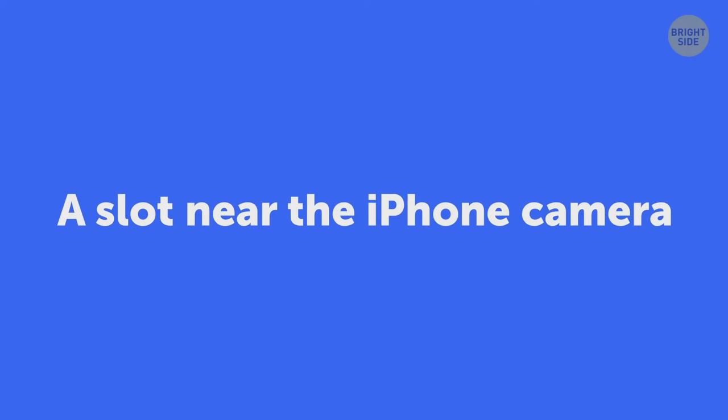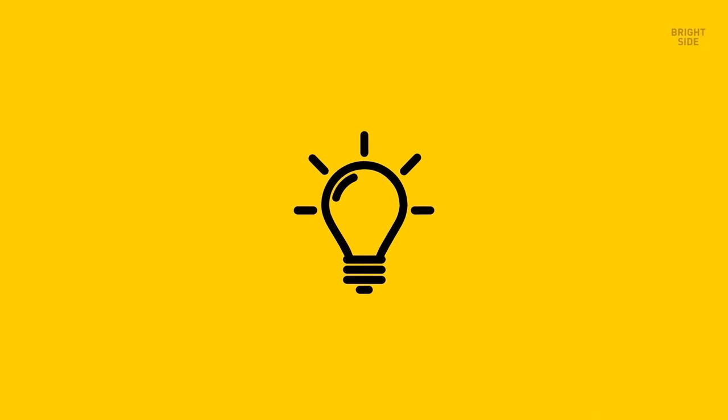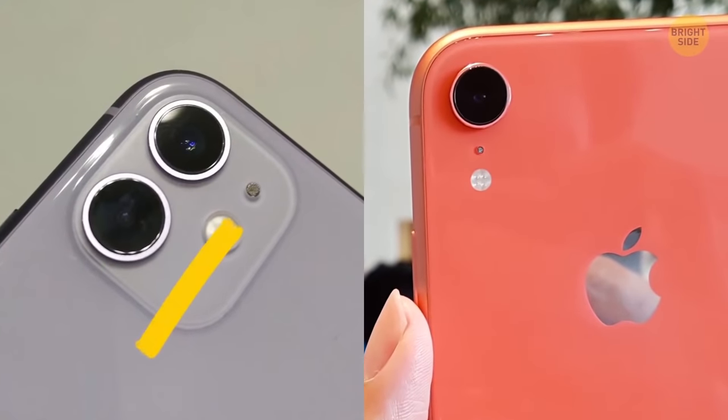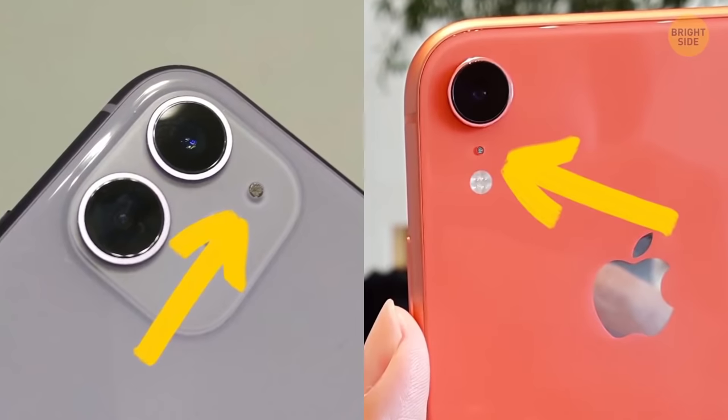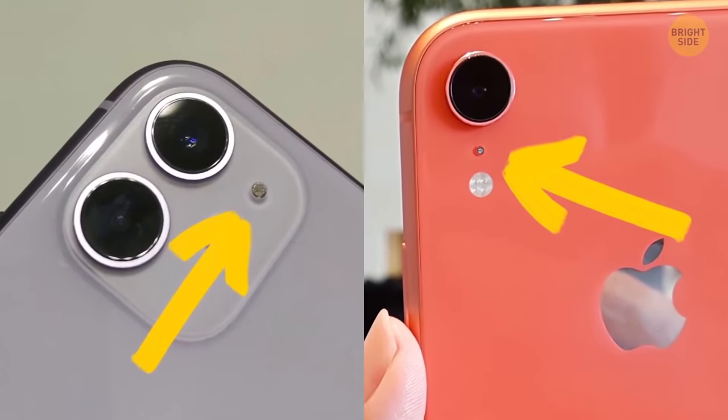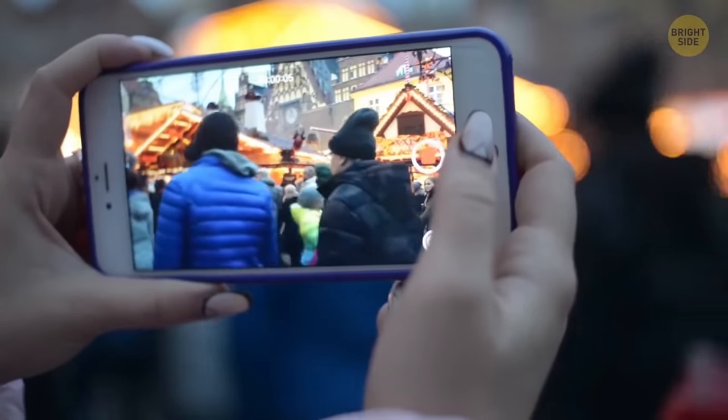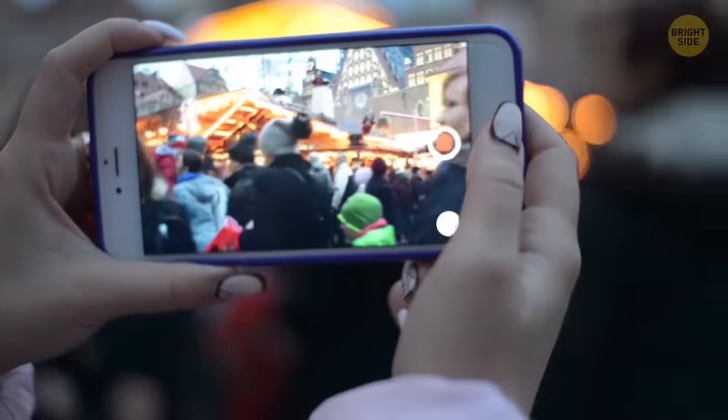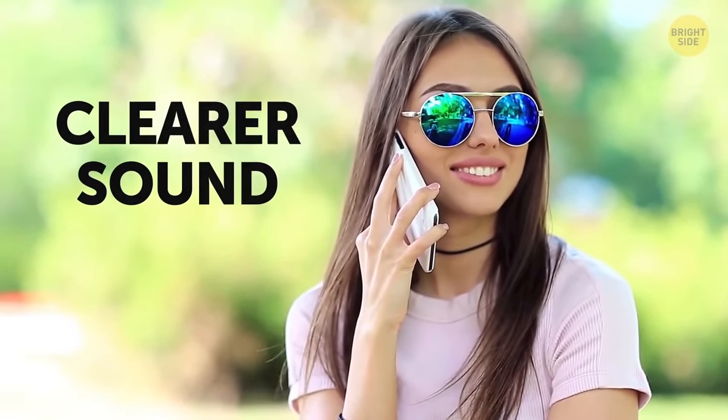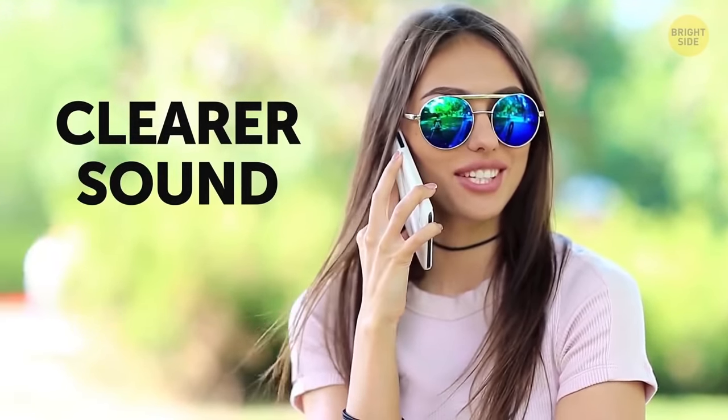Not every iPhone owner pays attention to an almost unnoticeable little hole between the camera and the flash. It's the gadget's second microphone. Its role is to block outside noises when you're filming a video. This microphone also makes the sound clearer. Use it when you're on the phone in a noisy place.